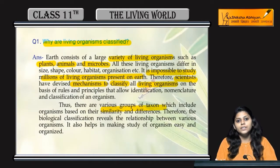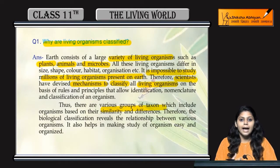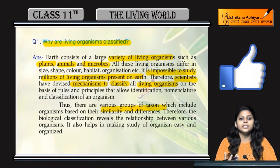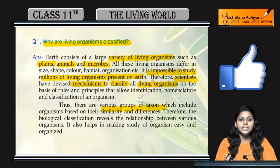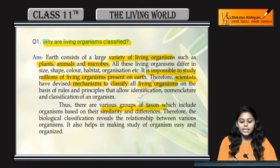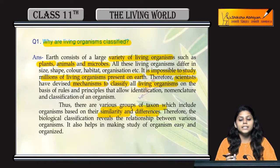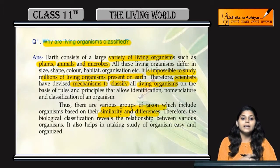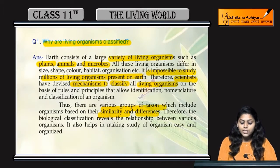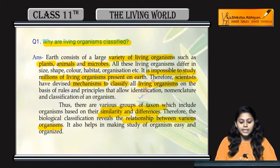बहुत ही different type के taxons हैं। Species उसमें से lowest है, and kingdom is at the highest position. जितने ज़्यादा similarities हैं, उतने ही ज़्यादा वो related होंगे। और जितने ज़्यादा dissimilarities हैं, उतने ही वो different होंगे। अब इन similarities और differences की वज़ह से evolutionary status या उनका relationship study करना easy है।